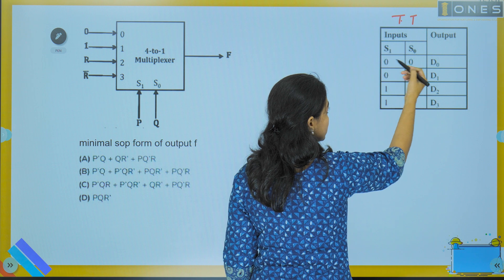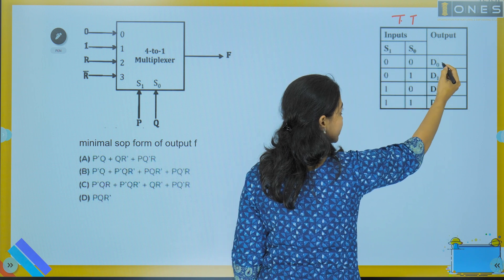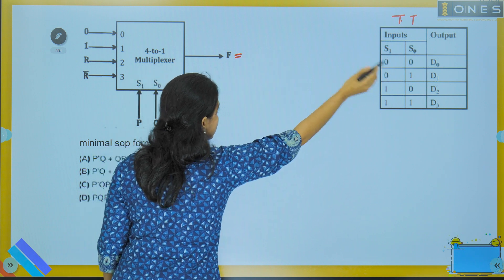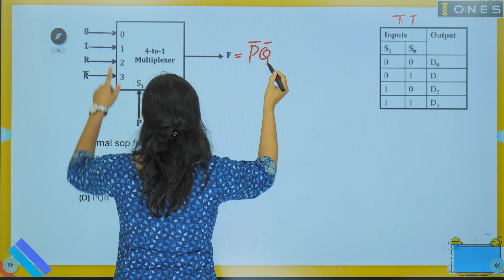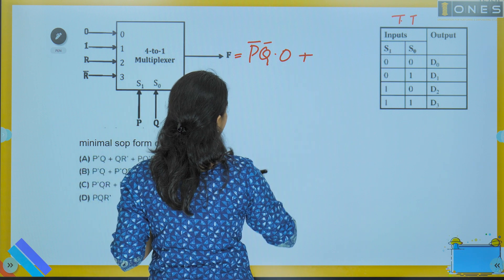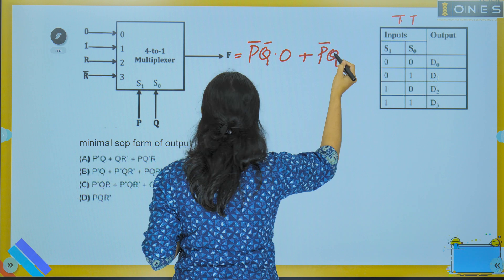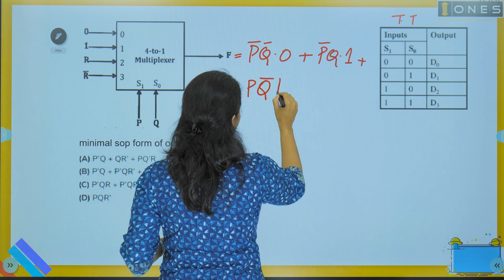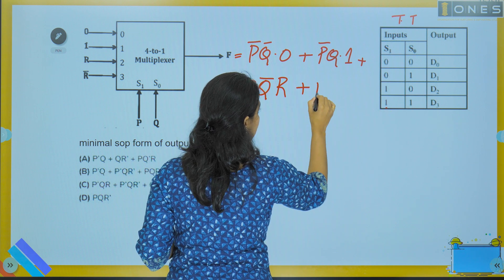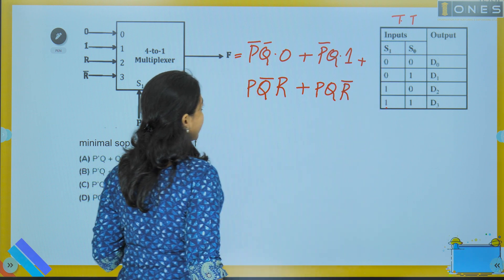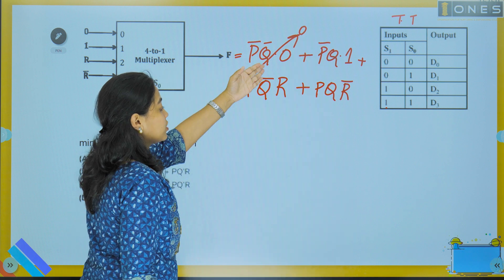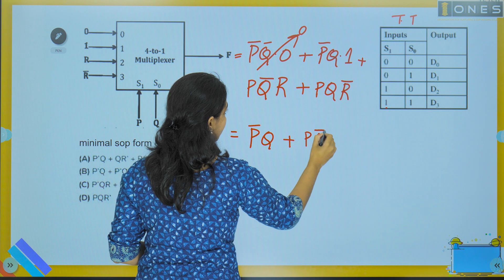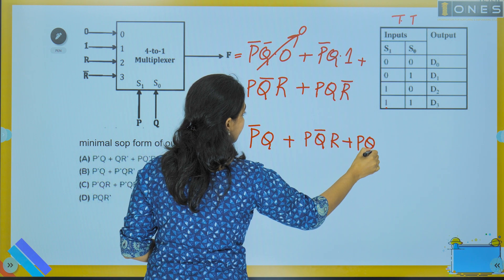Writing the expression for F: F = P̄·Q̄·0 + P̄·Q·1 + P·Q̄·R + P·Q·R̄. The first term drops to 0, giving: F = P̄·Q + P·Q̄·R + P·Q·R̄.